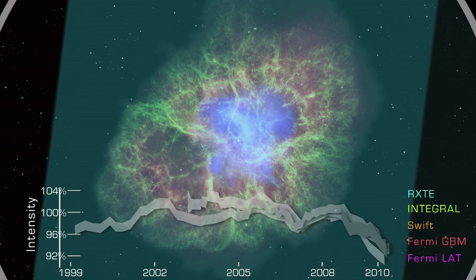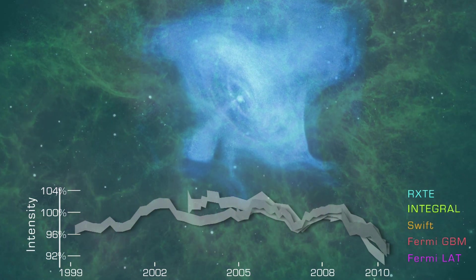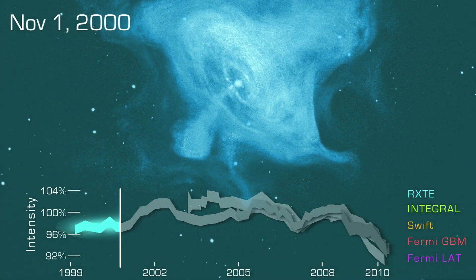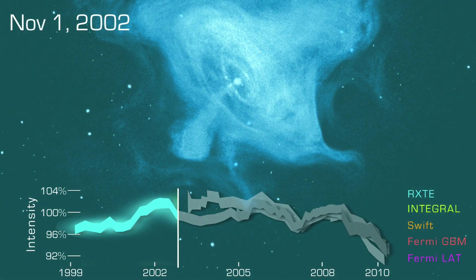Scientists think the X-rays reveal processes deep within the nebula in a region powered by a rapidly spinning neutron star, the core of the star that blew up. This image from NASA's Chandra X-ray Observatory shows how complex this inner region is.